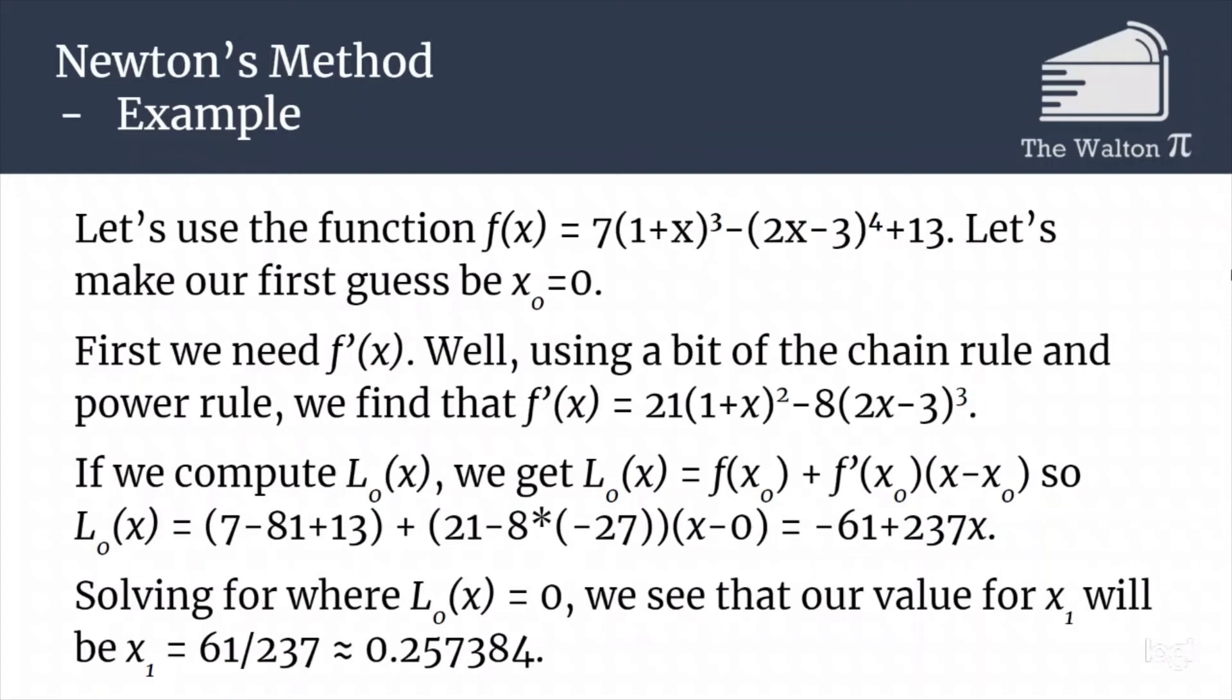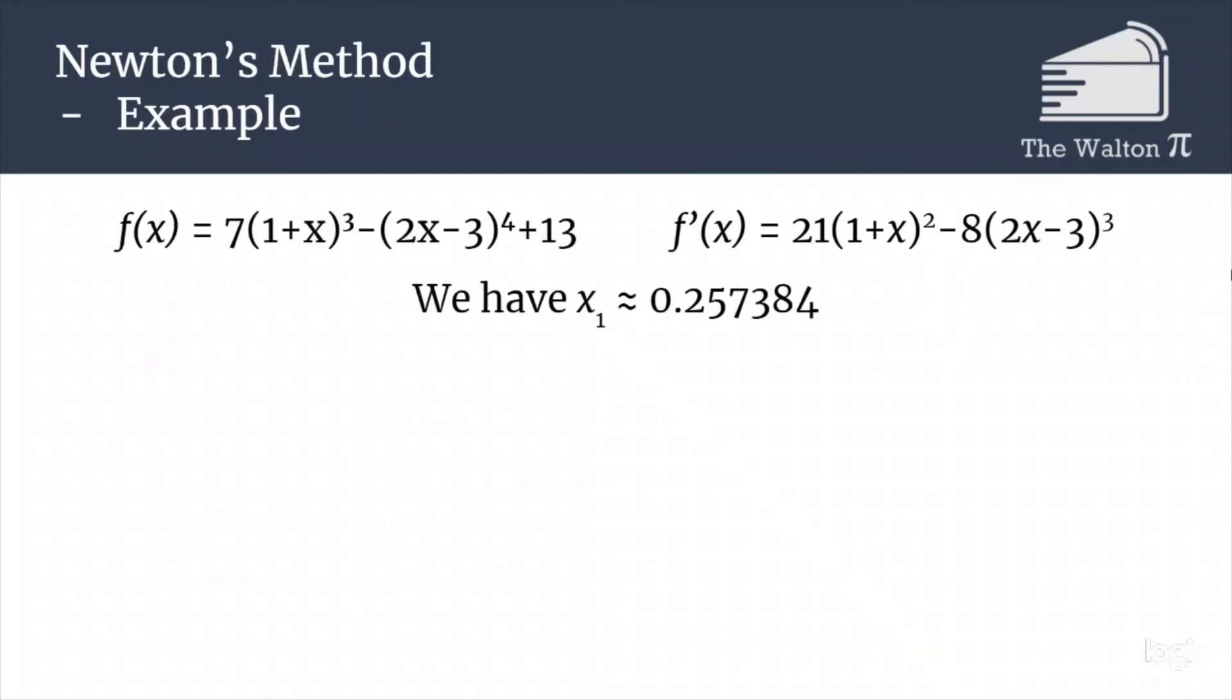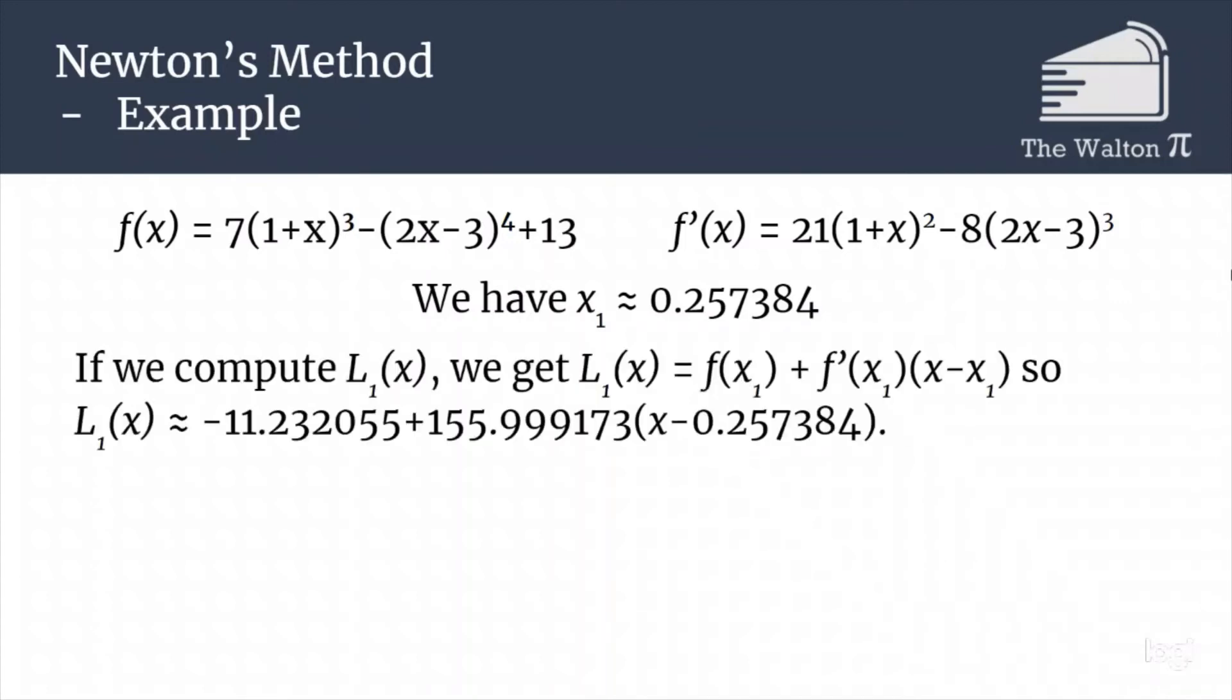Now what we are then going to do is that value 0.257384, that is now our x₁, and we are going to just repeat that process again. So computing L₁(x), we are going to just use the same formula, so L₁(x) = f(x₁) + f'(x₁)(x - x₁), and our line is going to be this pretty nasty looking thing. It's -11.232055 + about 156(x - x₁). That's an absolute mess, and this is why this is a method that is not usually done by hand. Instead, this is something that you can easily program a computer to do, and so this is how we have computers approximate functions.